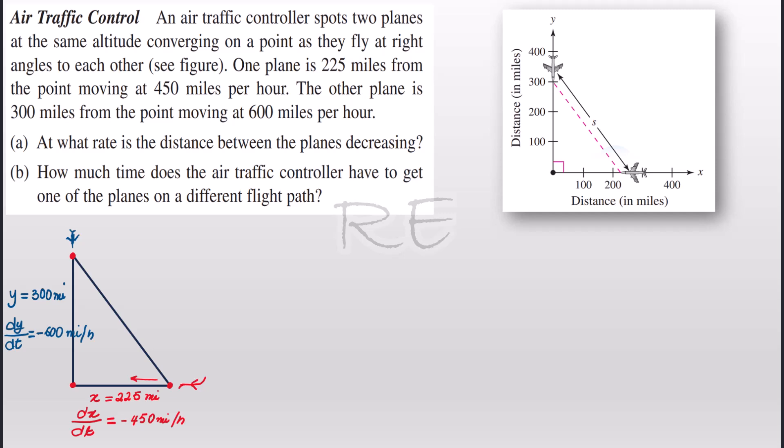The second plane is at a distance of 300 miles vertical distance from the same point and the distance is decreasing. Therefore its speed is negative 600 miles per hour and the distance between the two planes is s and they're asking us for the ds/dt which is the rate in which the distance between the planes is decreasing.